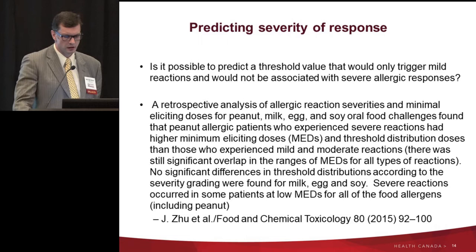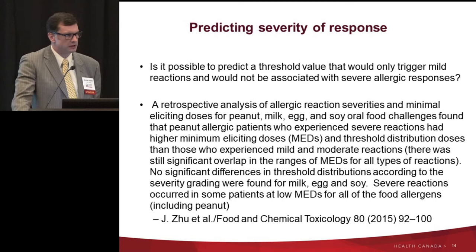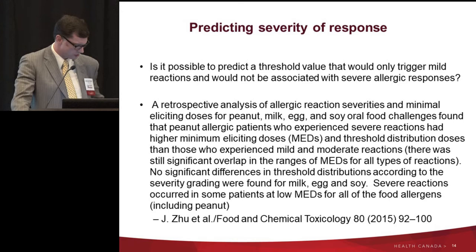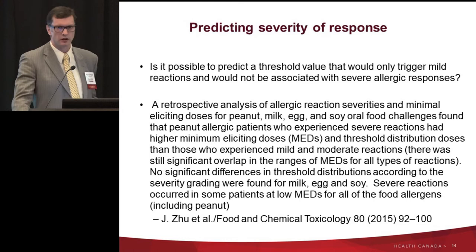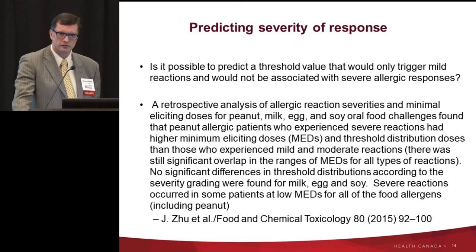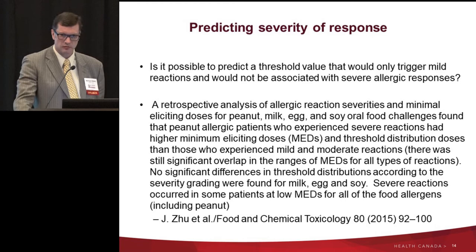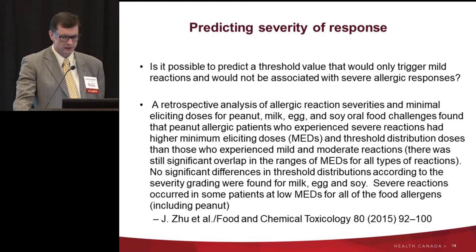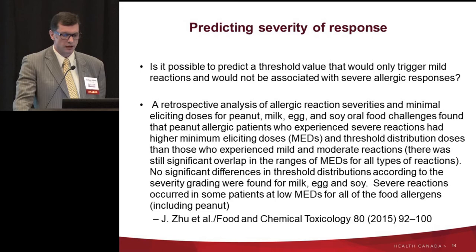Moving on to what I think are the more interesting slides — predicting severity of response. One of the challenges for health risk assessments for food allergens is that the hazard varies from one individual to another. One person can have a severe reaction at the same level of exposure that another person might have a minor reaction or even no reaction at all. The real question is: is it possible to predict a threshold value that would only trigger mild reactions and never be associated with severe allergic reactions?